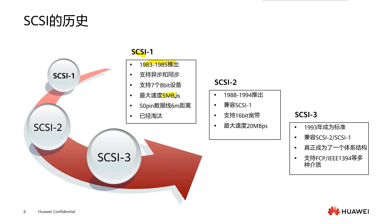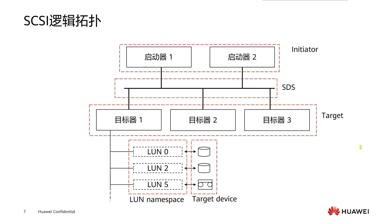The SCSI protocol essentially has nothing to do with transmission restrictions — it can be implemented on various media, even virtual media such as the FCP link protocol based on fiber optics and the link protocol based on SAS. From the beginning to the present, SCSI has gone through three basic specifications. SCSI-1 was first launched in 1985 with a maximum speed of 5 MB/s. SCSI-2 was launched in 1994, compatible with SCSI-1, with doubled bandwidth (16-bit) and a maximum speed of 20 MB/s. SCSI-3 is compatible with the previous two versions and has become a true architecture — it is the one most used today.